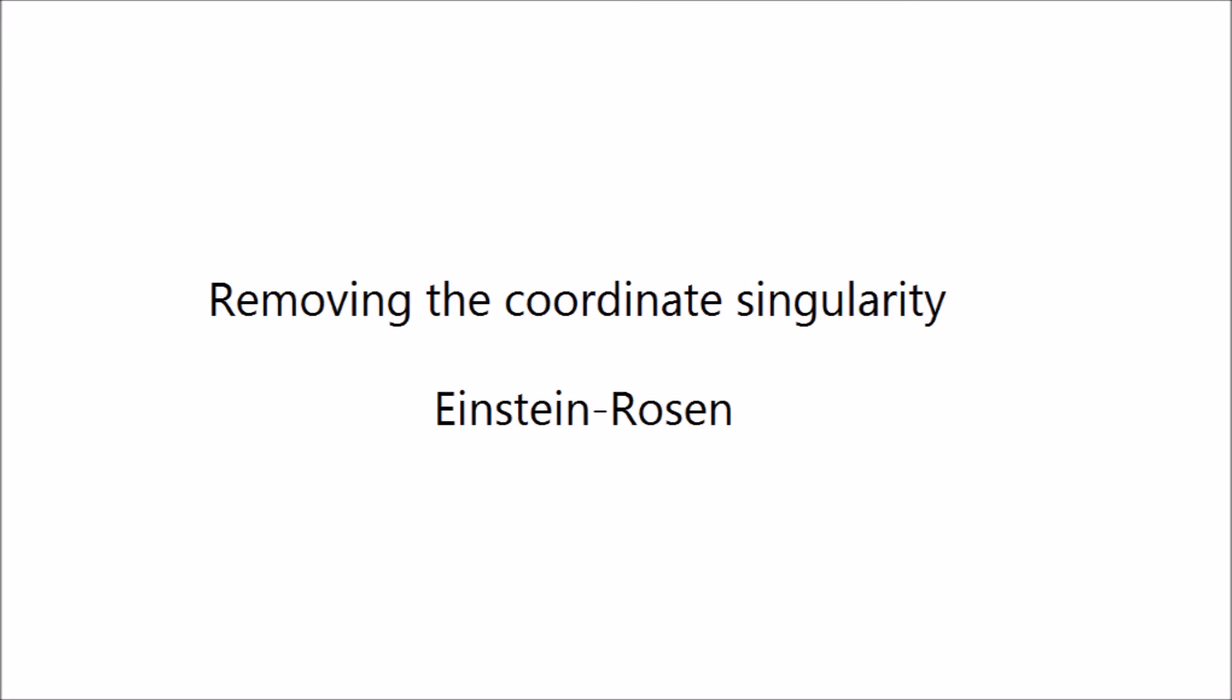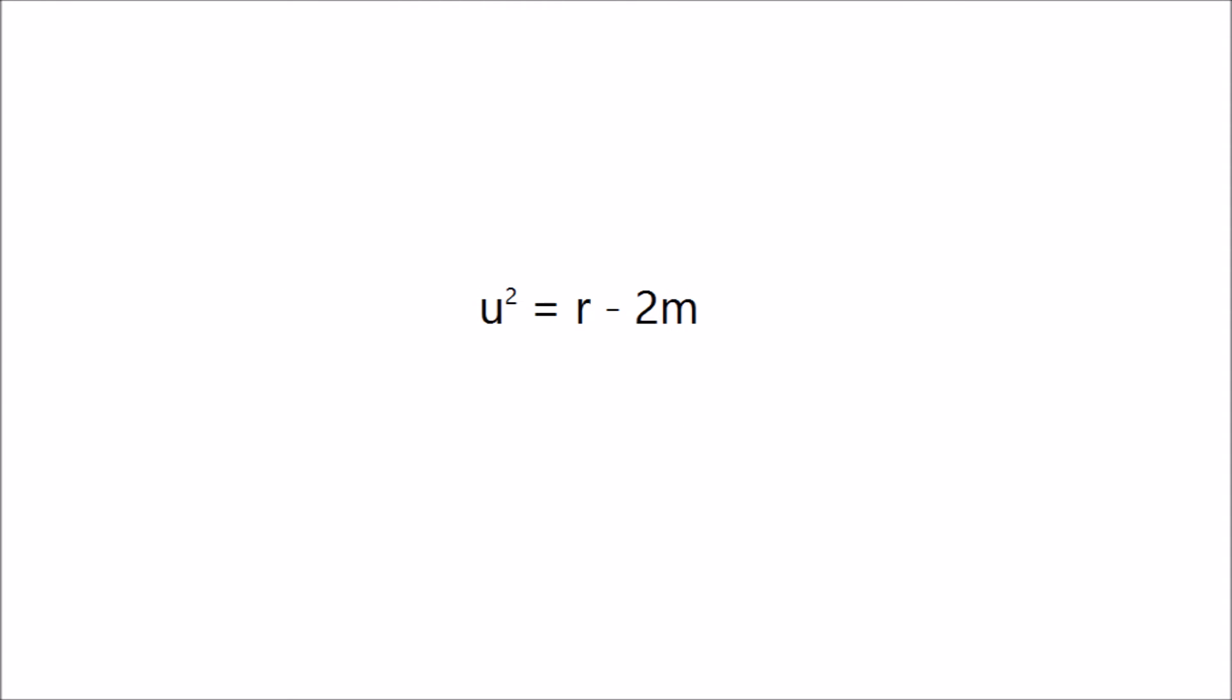Since the coordinate singularity of the event horizon remains in the metric, it must be removed. The Einstein-Rosen provides a transformation which does the job. If U squared equals R minus 2m is substituted into the metric, the singularity is removed.